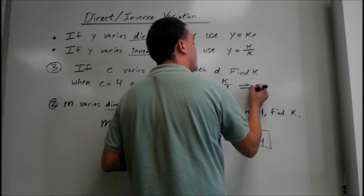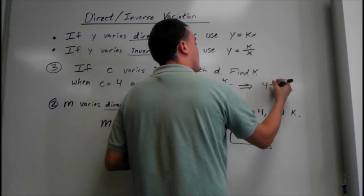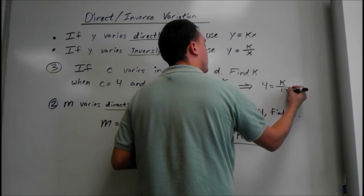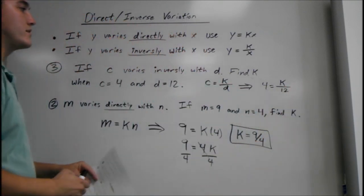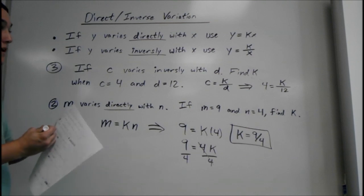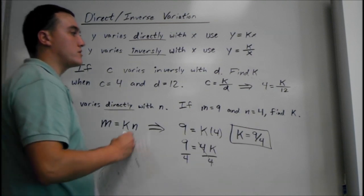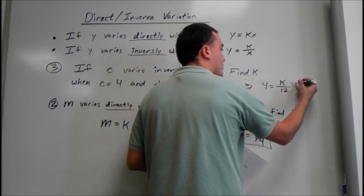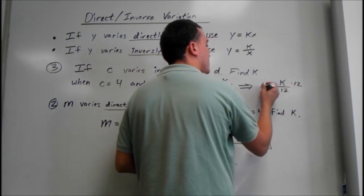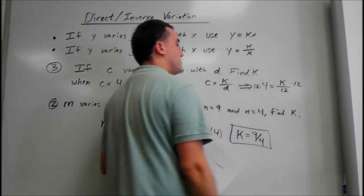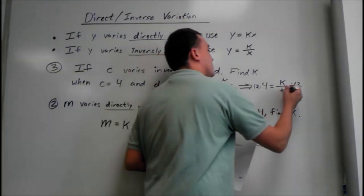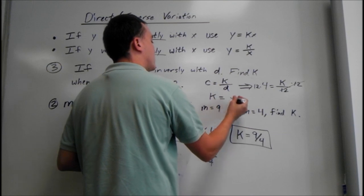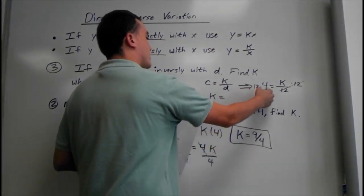This becomes 4 equals k over 12. Since we're dividing k by 12 and we're finding k, we want to multiply — because multiplying is the opposite of dividing — on both sides. So multiply by 12 on both sides; those will cancel. And we get k equals 4 times 12, which is 48.